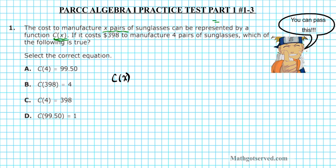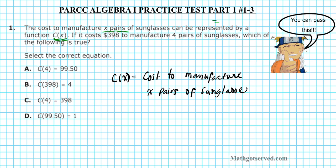c of x equals the cost to manufacture x pairs of sunglasses. So x here is your independent variable and your output or dependent variable is c of x. Now let's take a look at the second sentence and see what we can determine from that. It says: if it costs $398 to manufacture 4 pairs of sunglasses.